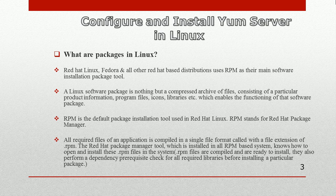Welcome to our Linux classes. Let's continue — we were discussing packages in Linux. In Red Hat Linux, Fedora, and all other Red Hat-based distributions, they use RPM as the main software installation package tool. RPM stands for Red Hat Package Manager. A Linux software package is a compressed archive of files which consists of product information, program files, icons, and libraries that enable the functioning of that software. Packages in Linux come in the format of dot RPM.